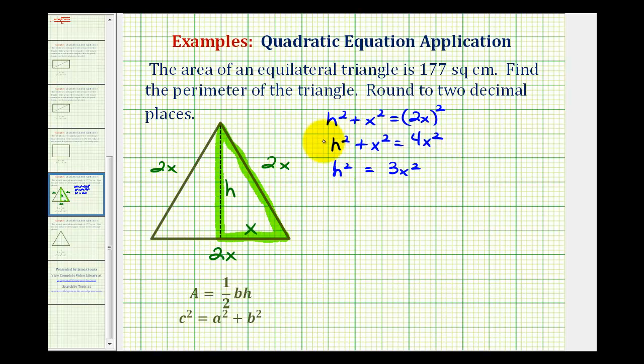And now we'll take the square root of both sides of the equation, and since h is a length, we're only concerned about the positive square root. So h is going to be equal to, the square root of x squared would be x, so this simplifies to x square root 3.